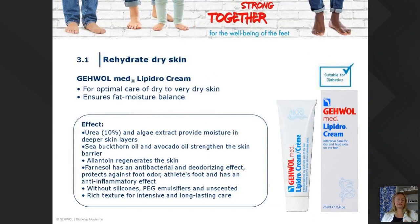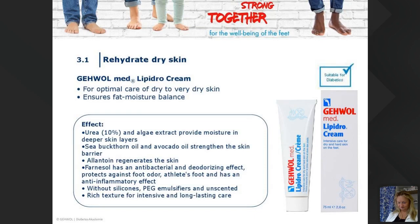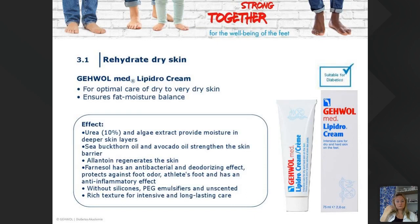A quick note before going into the products: Gable has around 34 products suitable for diabetes, but during this presentation we're going to show you about six of the most recommended ones for the most common problems. In the professional catalog you can always check if a product is suitable for diabetes. These are the most recommended ones for the most common problems, but they're not the only ones.